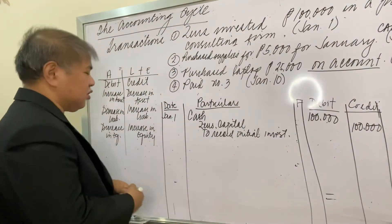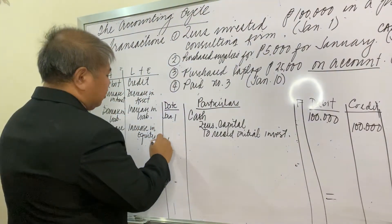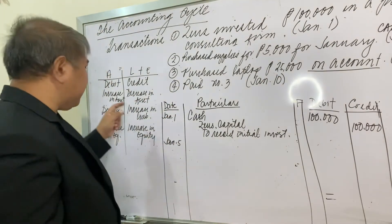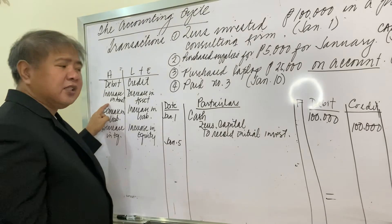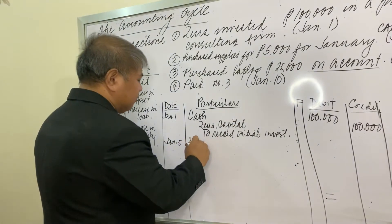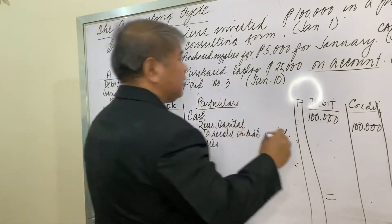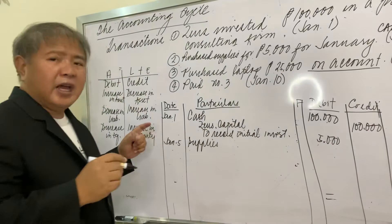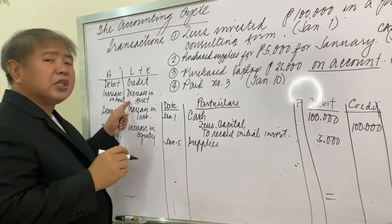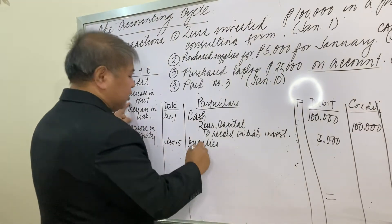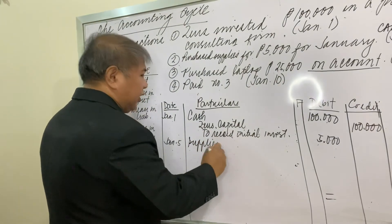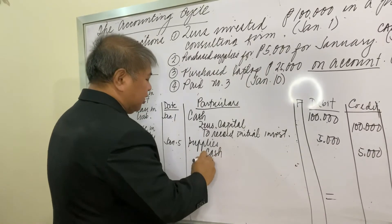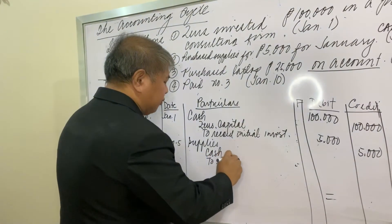For January 5: supplies increased — supplies is an asset, so debit Supplies for 5,000 pesos. Cash decreased because it was used to pay for the supplies — a decrease in asset is a credit, so credit Cash for 5,000 pesos. Description: 'To record purchase of supplies.'